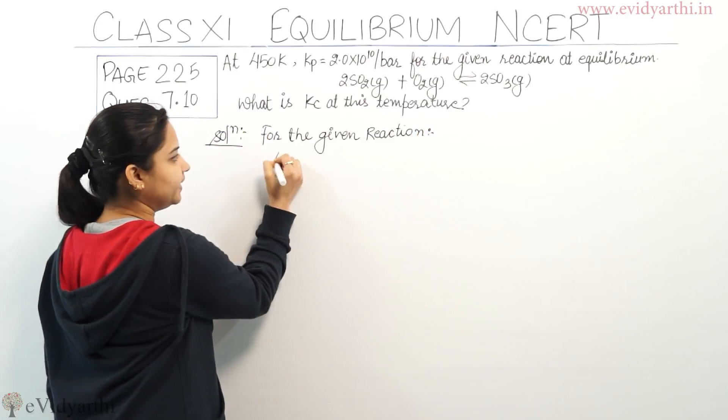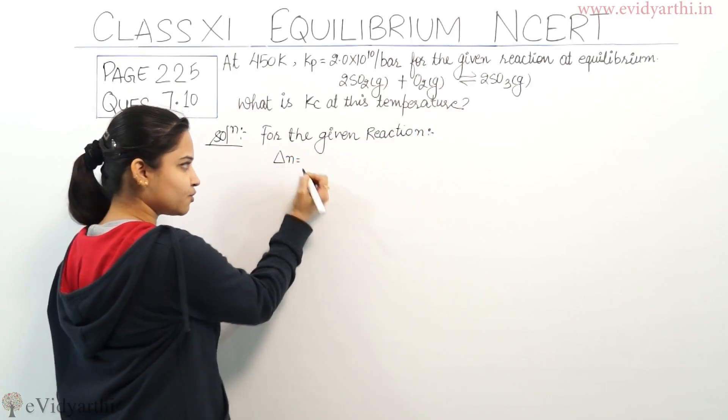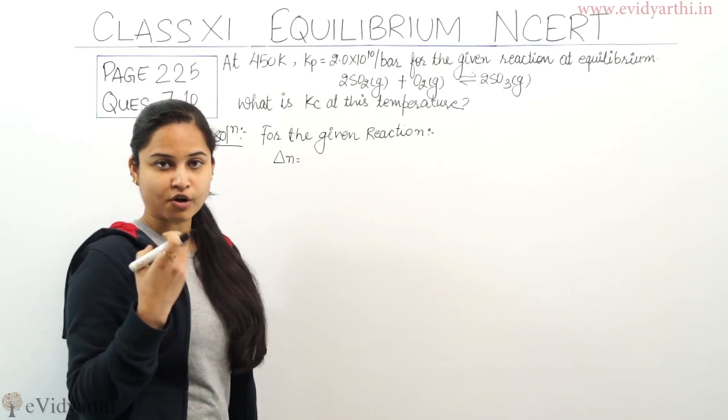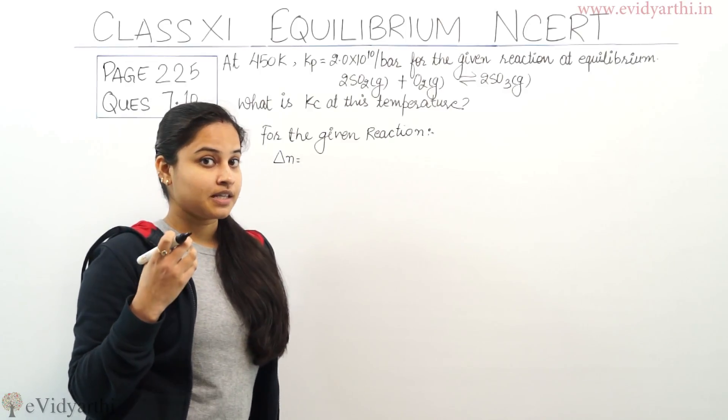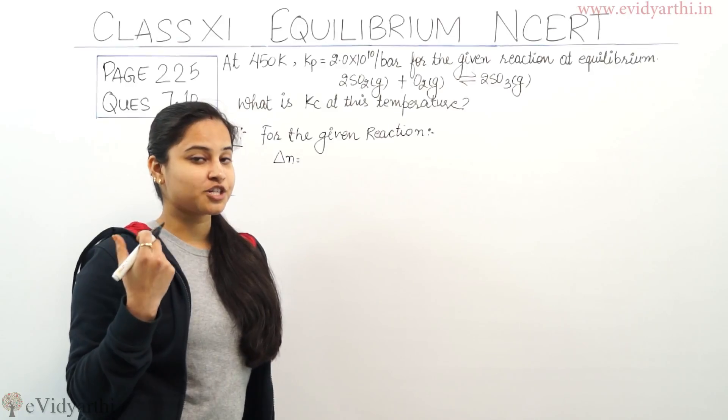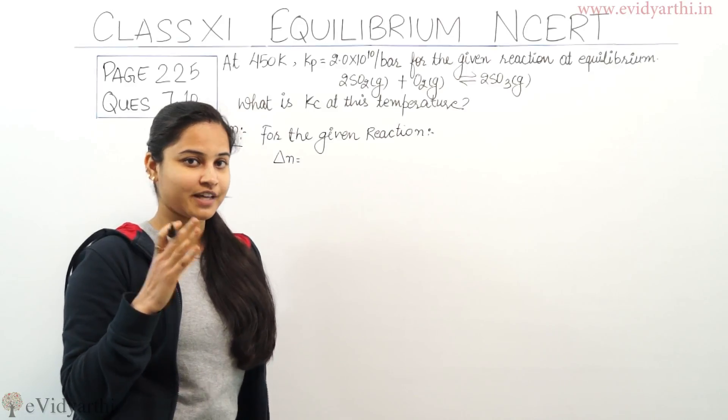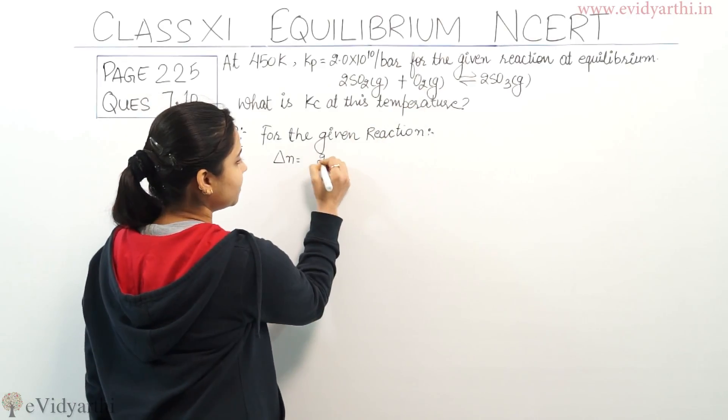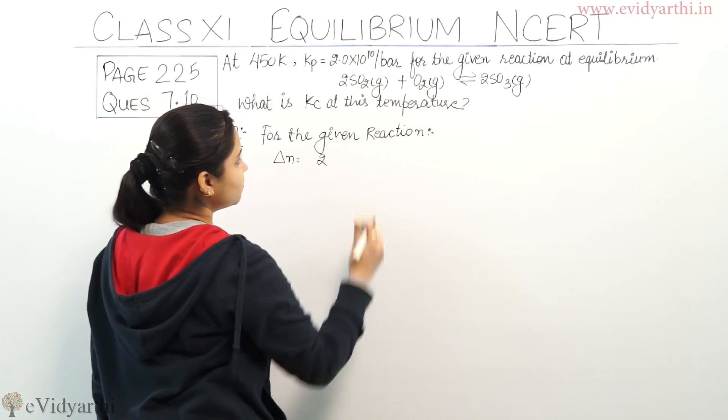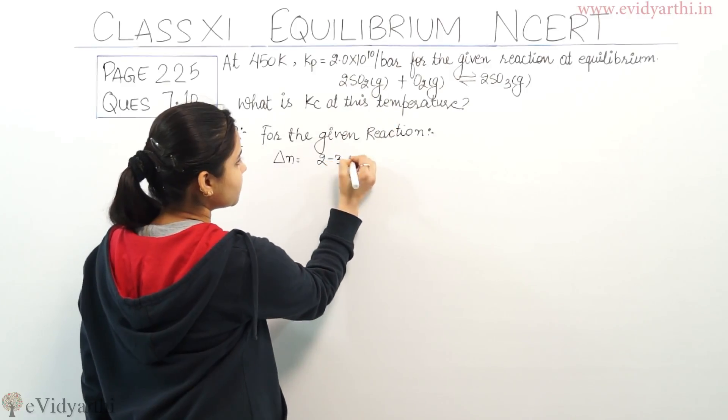Delta n (Δn) is equal to the difference in the number of moles of gaseous product and the number of moles of gaseous reactant. So delta n equals 2 (in product there are two number of moles) minus 3, which equals minus 1.